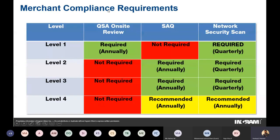Based on the merchant level, there are specific compliance requirements. A level one merchant must invite a QSA on-site every year to complete a full audit of their environment and receive a PCI DSS compliance certificate. They also need to carry out an ASV network security scan every quarter. Other merchant levels can follow a self-assessment questionnaire — a self-check against PCI DSS requirements — rather than requiring a QSA. The PCI Council has simplified compliance efforts based on transaction volume.